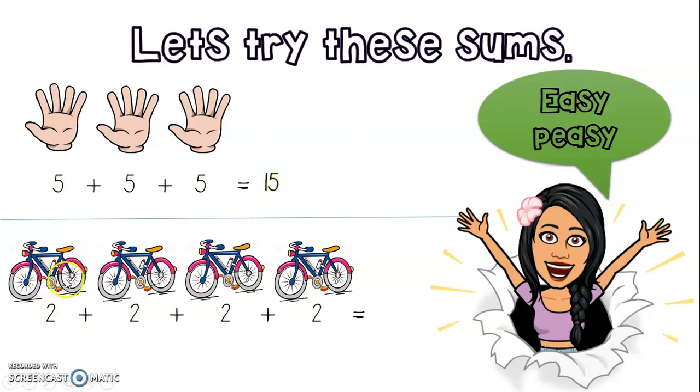We have four bicycles. Let's see our sum. We want to know how many wheels are there all together. We've got 2 + 2 + 2 + 2. If we knew how to count in twos...